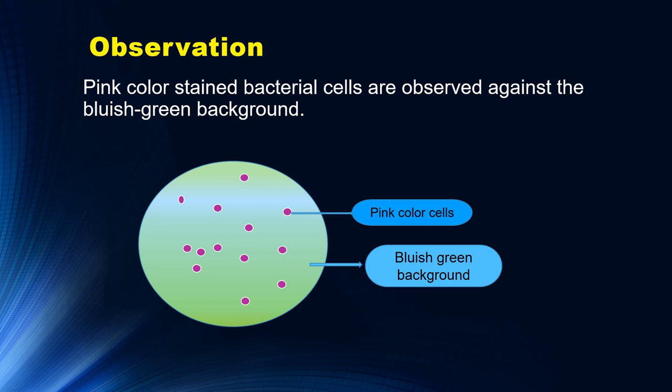Now let's see the observation. Here we are going to observe pink color stained bacterial cells. These cells are observed against the bluish green background. So you are going to get a bluish green color background and pink color bacterial cells. This was all about Rickettsia staining by the Gimenez method. If you liked my video, please like, share and subscribe to my channel. Don't forget to comment in the comment section. Thank you for watching.